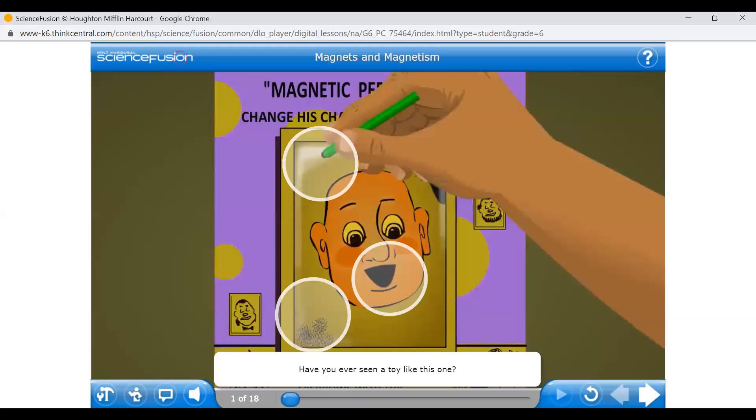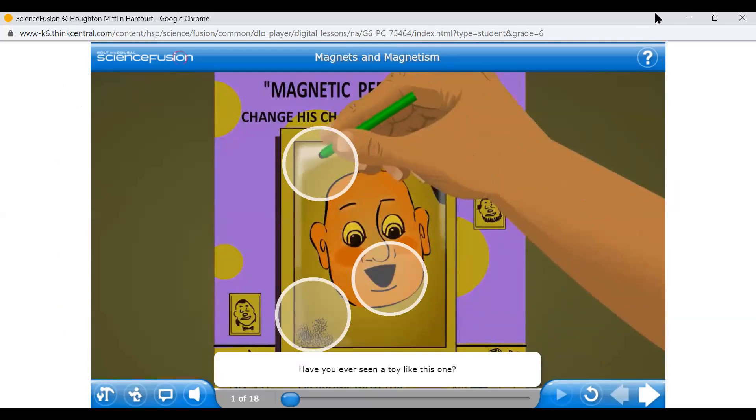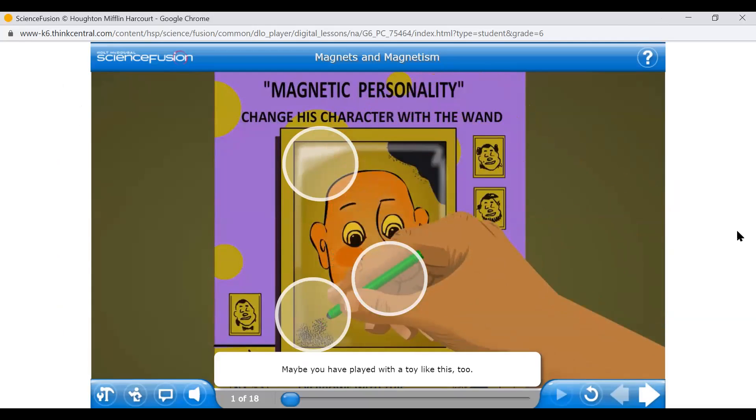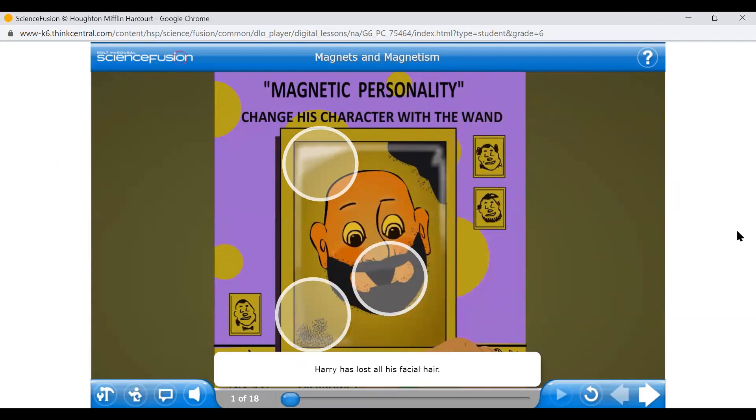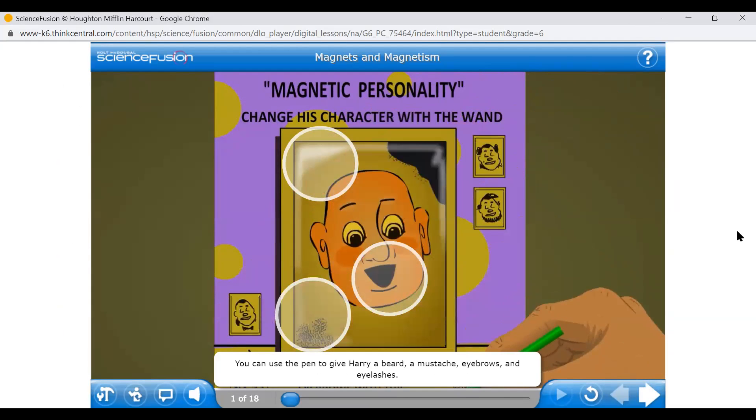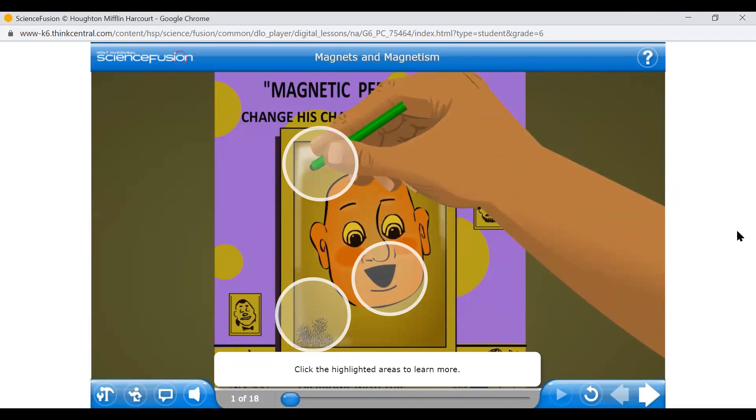Have you ever seen a toy like this one? Kids used to play with this kind of toy a lot. Maybe you have played with a toy like this too. Look at the poor guy. Let's call him Harry. Harry has lost all his facial hair. You can use the pen to give Harry a beard, a mustache, eyebrows, and eyelashes. Click the highlighted areas to learn more.